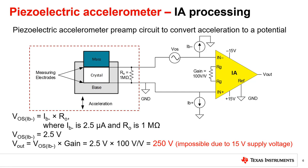This 2.5 volts of offset error due to IB at the input results in even more offset error at the output as we apply gain. With the IA configured in a gain of 100 volts per volt with ±15 volt supplies, the output would be driven to the rail simply due to the IB offset error. The electrical potential of the accelerometer has been completely masked by the error of the circuit — this circuit does not work at all.